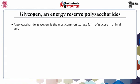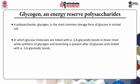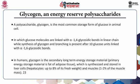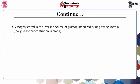Glycogen and energy reserve polysaccharides: glycogen is the most common storage form of glucose in animal cells, in which glucose molecules are linked with alpha-1,4 glycosidic bonds in a linear chain. Branching is present after every 10 glucose units, linked with alpha-1,6 glycosidic bonds. In humans, glycogen is the secondary long-term energy storage material which is synthesized and stored in liver cells and muscles.